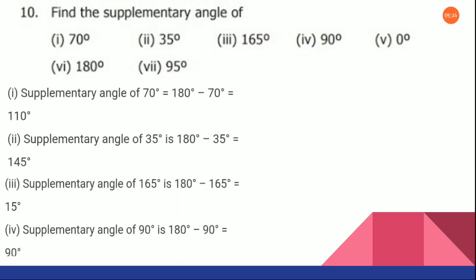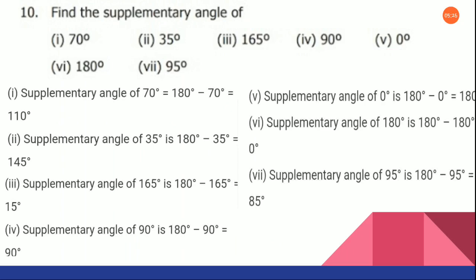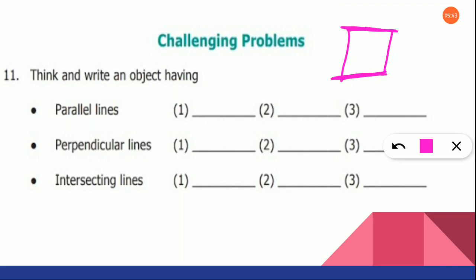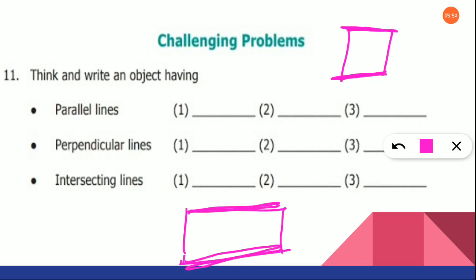You sit and do on your own and then check with the answers given here. Now look at the 11th question. Think and write an object having parallel lines. For example, take a notebook — this line and this line we can say are parallel lines. Same way if you are taking a table, a rectangular table, this line is parallel to this line.